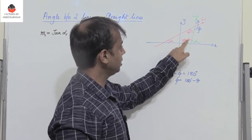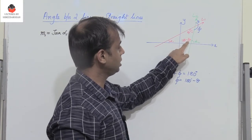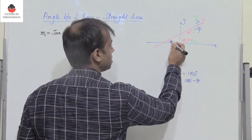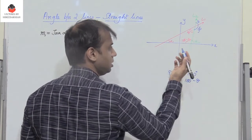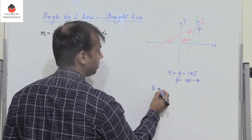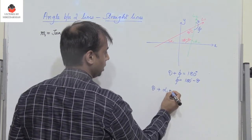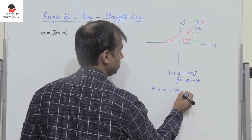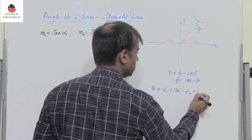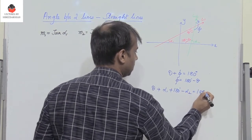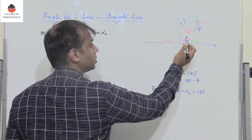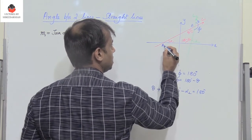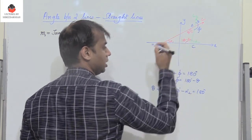We find that this angle is 180 minus alpha2. Since the sum of all three angles in the triangle equals 180 degrees, we get: theta plus alpha1 plus (180 degrees minus alpha2) equals 180 degrees, representing the triangle ABC.